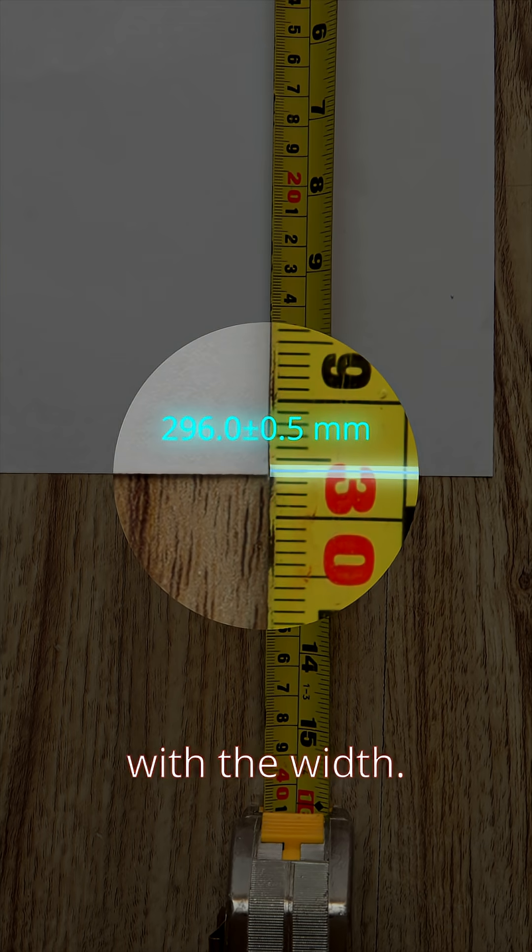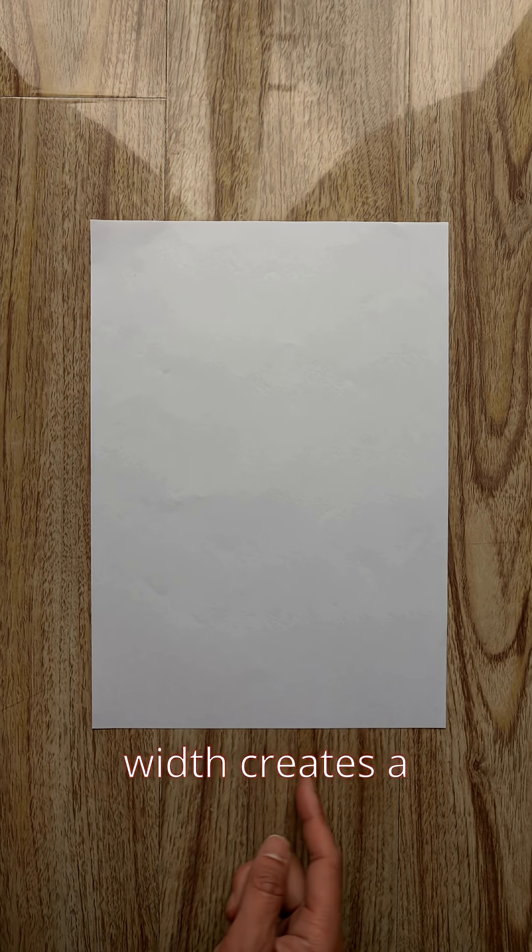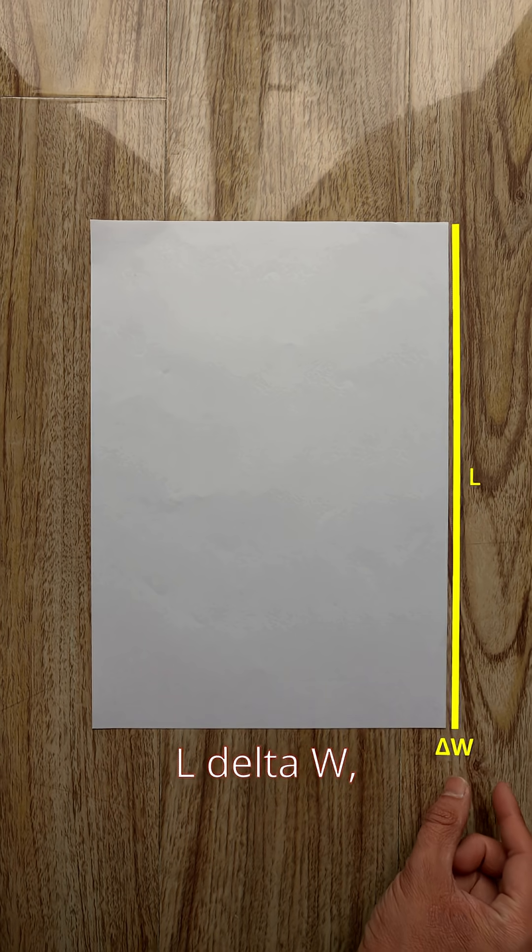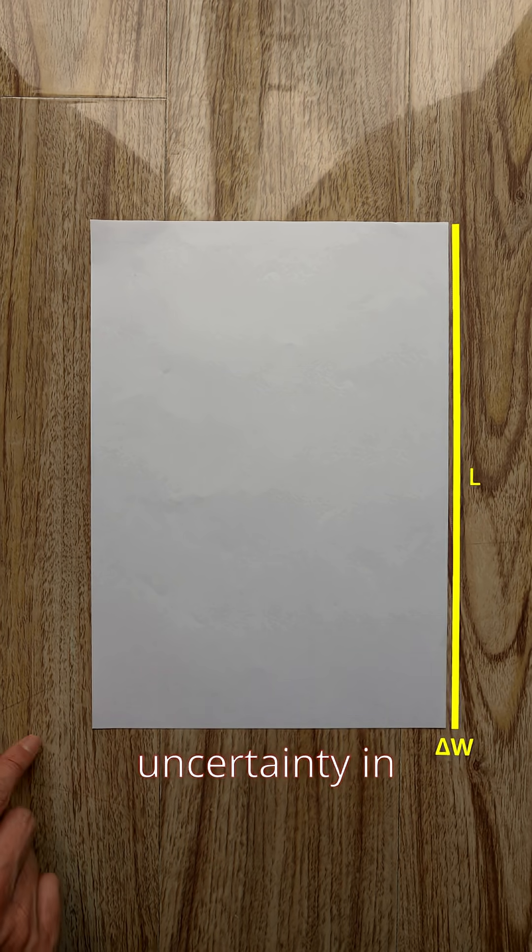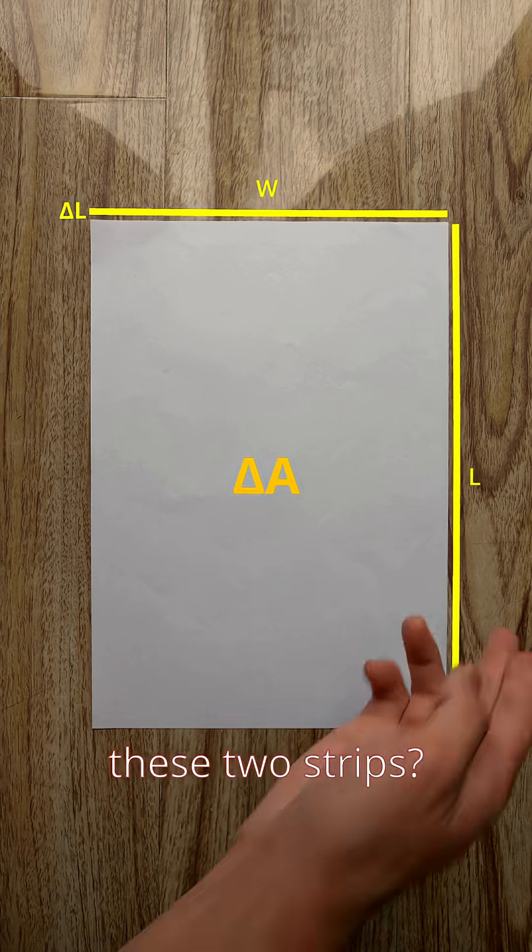And the same thing happens with the width. Now how do we get the uncertainty in area? Well, the uncertainty in width creates a vertical strip with area L delta W, and the uncertainty in height creates a horizontal strip with area W delta L. Is the uncertainty in area the sum of these two strips?